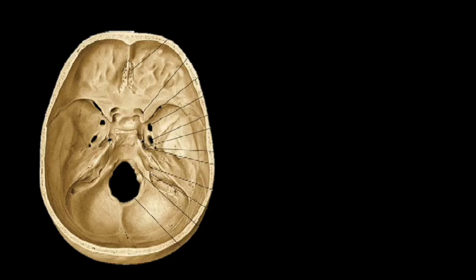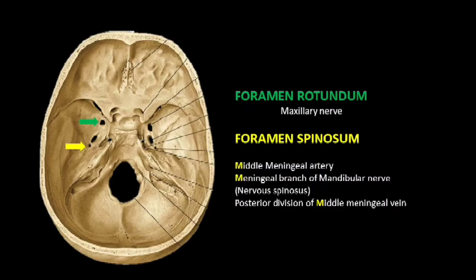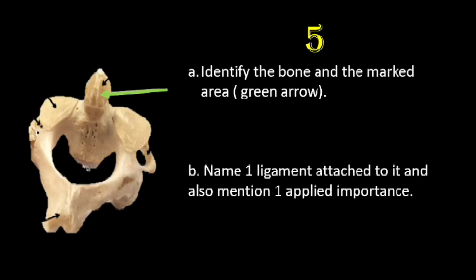We will also look at the other two foramina near the foramen ovale. The one sitting above is the foramen rotundum, which transmits the maxillary nerve. The one seen below is the foramen spinosum, which transmits three structures — the 3 M's: the middle meningeal artery, the meningeal branch of the mandibular nerve (also known as nervus spinosus), and the posterior division of the middle meningeal vein. The order is: foramen rotundum, foramen ovale, and foramen spinosum.